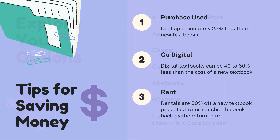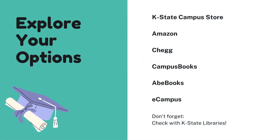There are many options for where you can order your textbooks, but there are several that are popular with K-State students. To search for a textbook on these websites, simply copy and paste the ISBN number into the search bar. If a website doesn't have your textbook in stock, continue to explore other websites — other websites may have better prices available.